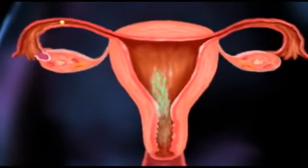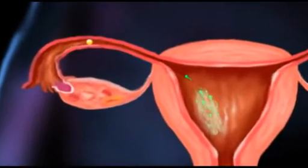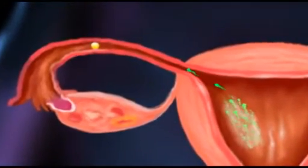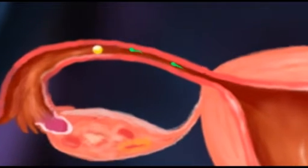This requires the sperm cells to swim from the upper vagina, through the cervix, and across the length of the uterus before reaching the fallopian tube, a considerable distance compared to the size of the sperm cell.